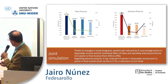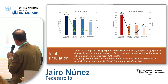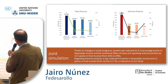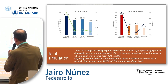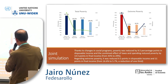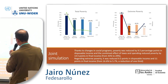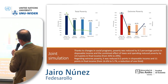Let's see the main results on total poverty. Thanks to changes in social programs, poverty was reduced by 9.5 percentage points in disposable income. The combined effect on taxes and spending reduced poverty in Colombia — in the joint simulation — by 14.5 points in final income, from 43% to 29%, just by making these improvements in taxes and social spending.